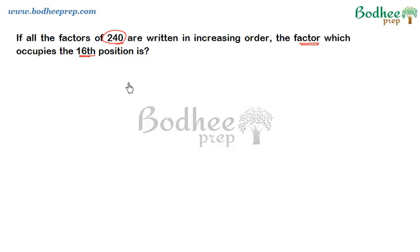So to understand this question in a far better way, let us take a very small number. Suppose if I take a number say 20. So we can write all the factors of 20 like 1, 2, then 4, then it will be 5, then it will be 10, and then it will be 20.